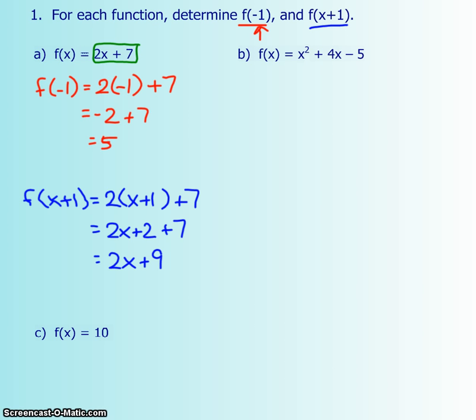And let's do the second one. f at negative 1, and again, everywhere we see x's, we're going to put a negative 1 in brackets. And then we're going to simplify. So negative 1 squared is positive 1, positive 4 times negative 1 is negative 4, and then minus 5, which is negative 3 minus 5 is negative 8.